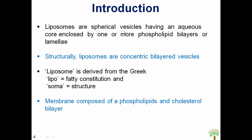So, what are liposomes? Liposomes are spherical vesicles having an aqueous core and they are dispersed in water. They have a phospholipid bilayer, which we call the lamella. Structurally, liposomes are concentric bilayer vesicles, meaning they are made up of multiple bilayer vesicles having a single center. The word liposome is derived from the Greek words: lipo, meaning fatty constituent, and soma, meaning a structure. The membrane of liposomes is made up of two main components: phospholipid and cholesterol.